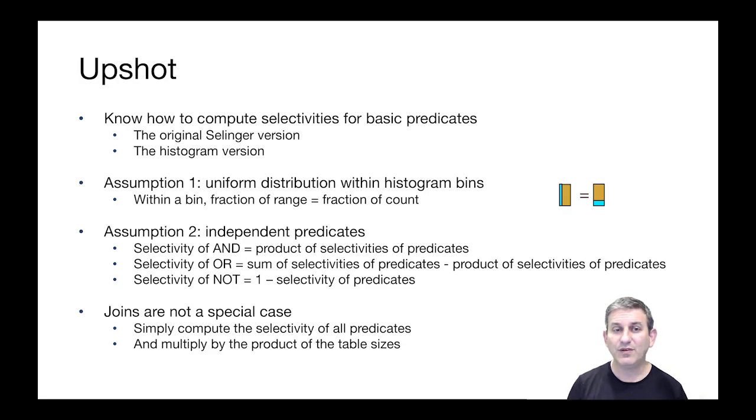For joins, you simply have to compute the selectivity of all the predicates involved in the theta and then multiply that by the product of the table sizes to account for the fact that the input to the theta is actually the cross product, the Cartesian product of the input relations.